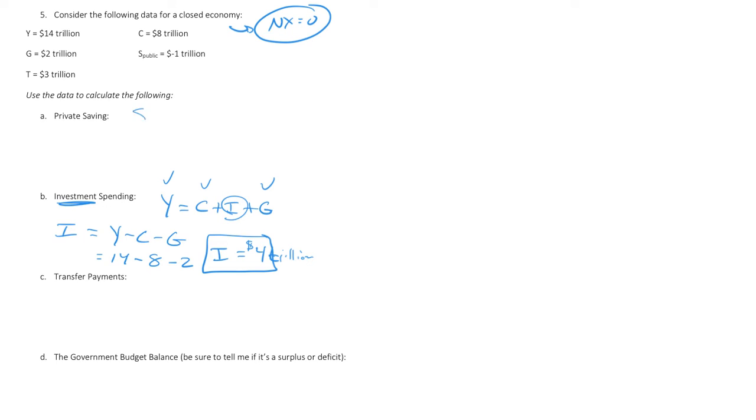Private savings. You might think, well, private savings from class and textbooks is income plus transfer payments minus consumption and taxes. But we don't have transfer payments. In fact, we're going to get it down here. But we also have to remember that overall savings equals investment. And we know that savings is just private savings and public savings.